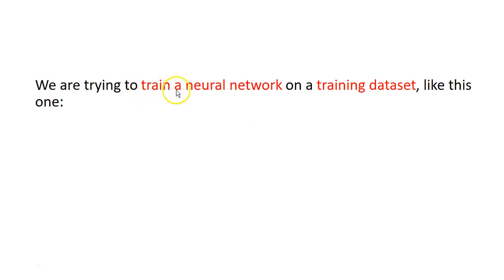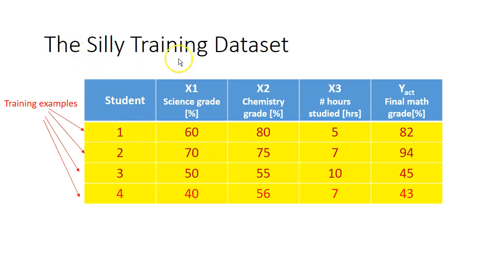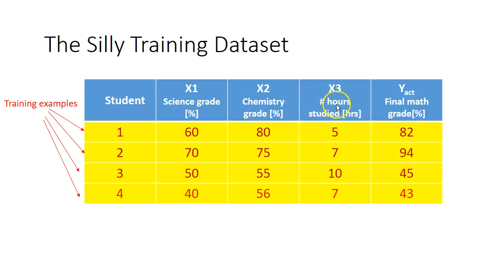We are trying to train a neural network on a training data set like this one. This is a dataset for students and we're looking at their grades. We've got a bunch of grades here and ultimately what we're trying to do is train a neural network to predict a final math grade. We've got three input features x1, x2, x3 — which are the science grade, the chemistry grade, and the number of hours studied for the maths exam — and then we have the final math grade. Each of these rows is called a training example.